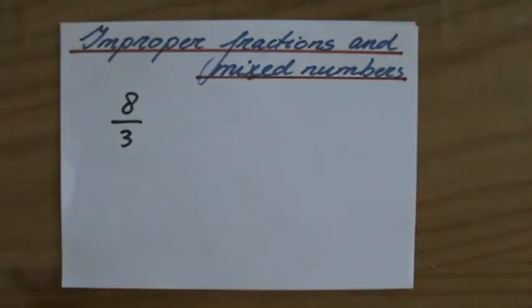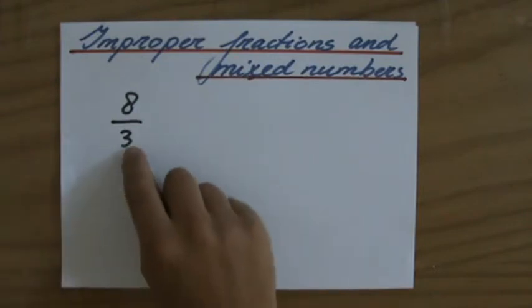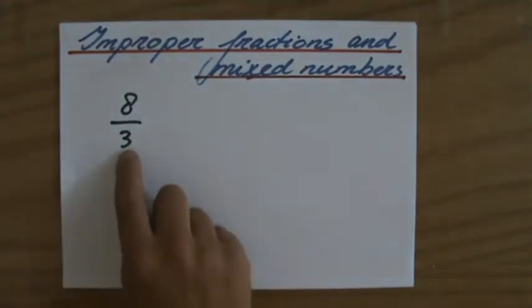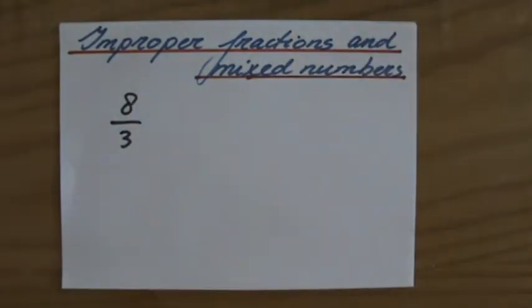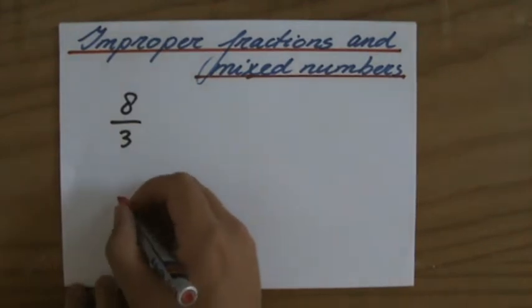Now 8 over 3, which means basically 8 divided by 3. Now if we talk about thirds, because these are thirds, how many do I have of those thirds? I have 8 of them. I just want to show you what we're actually talking about.